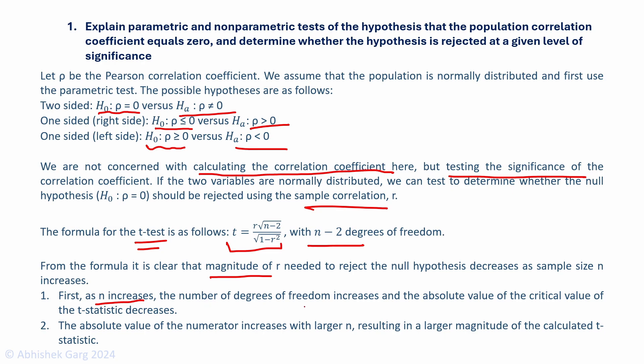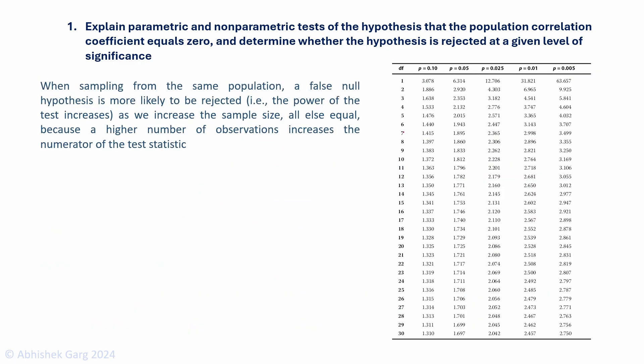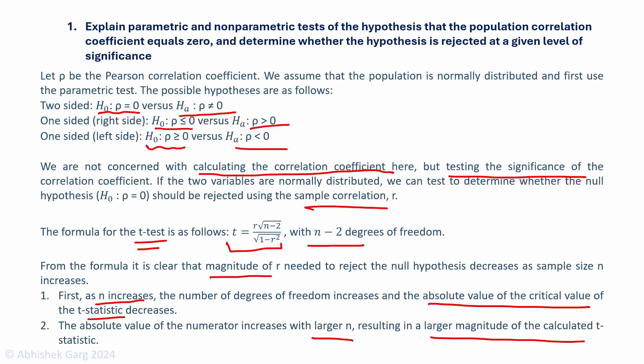As n increases, the number of degrees of freedom increases and the absolute value of the critical value of the t-stat decreases. The absolute value of the numerator increases with larger n, resulting in larger magnitude of the calculated t-stat. We can clearly see from this table that as the degrees of freedom increases, the absolute value with respect to a particular level of significance decreases. The critical value decreases and as n increases, we know that the numerator increases from this formula.